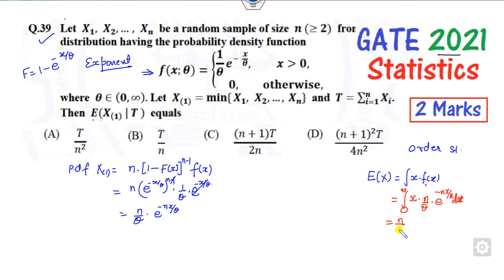from 0 to infinity. You can easily solve this using the gamma function. The integration gives you θ/n.